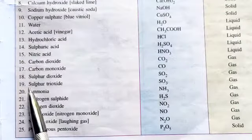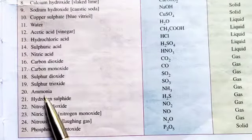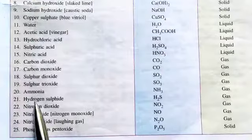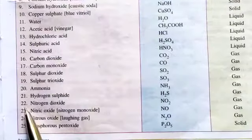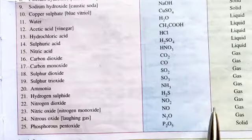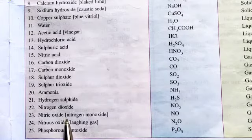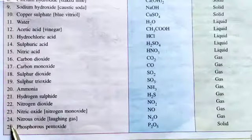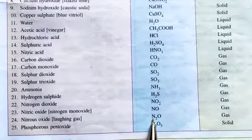19. Ammonia — its formula is NH3 and its state is gas. 21. Hydrogen sulphide — its formula is H2S and its state is gas. 22. Nitrogen dioxide — its formula is NO2 and its state is gas. 23. Nitric oxide, also known as nitrogen monoxide — its formula is NO and its state is gas. 24. Nitrous oxide, also known as laughing gas — its formula is N2O and its state is gas.